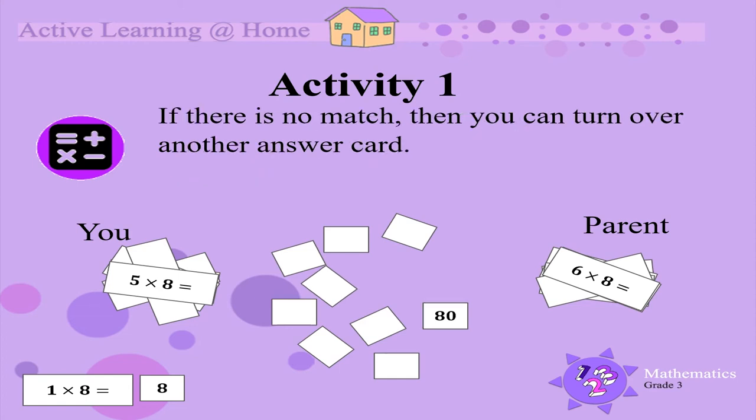If there is no match, then you can turn over another answer card. 48. Your parent's multiplication card is 6 times 8. 6 times 8 is 48. Your parent should say SNAP.